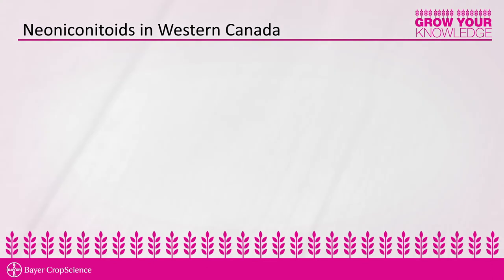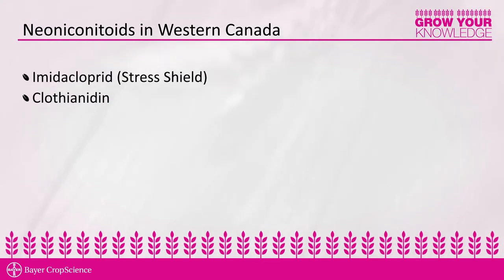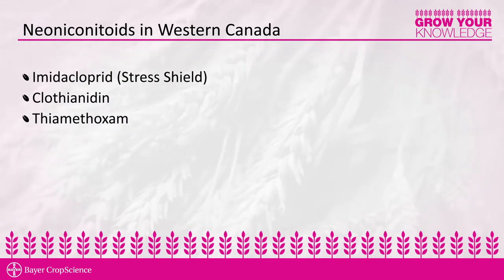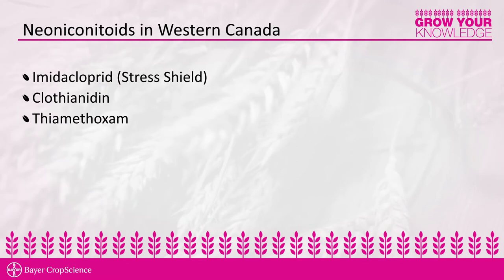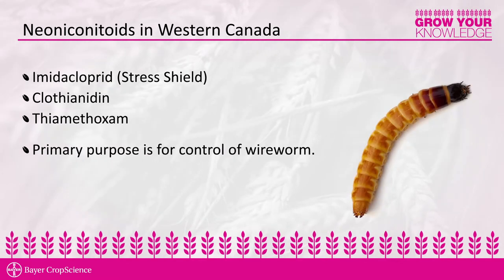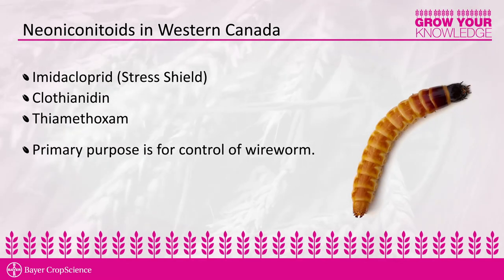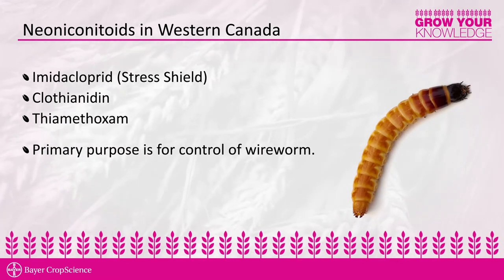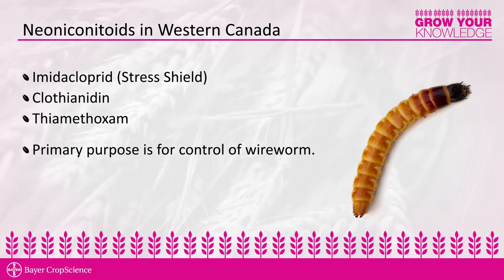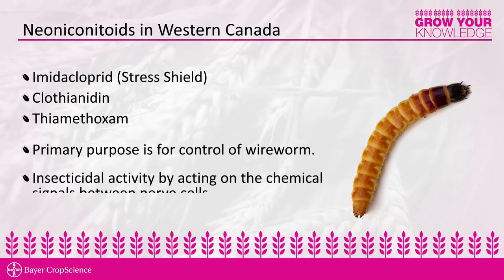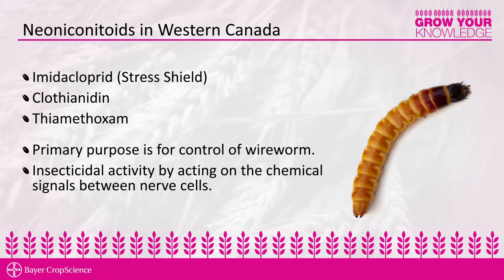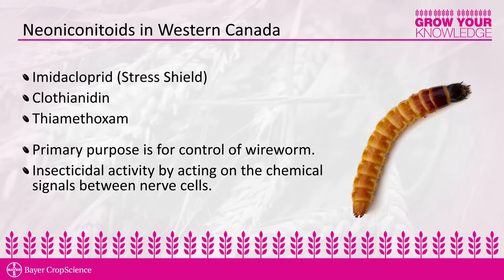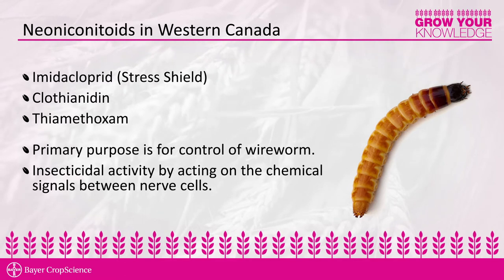Stress Shield is a neonic insecticide. The primary purpose for using Stress Shield as a cereal seed treatment is to provide control of the insect wireworm. It provides this control by interrupting signals between the nerve cells of the insect without having any harmful effect on the plant.